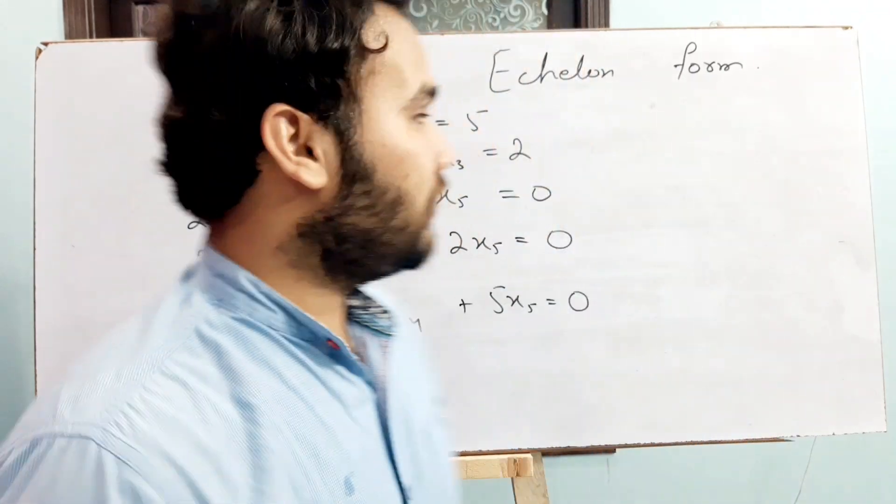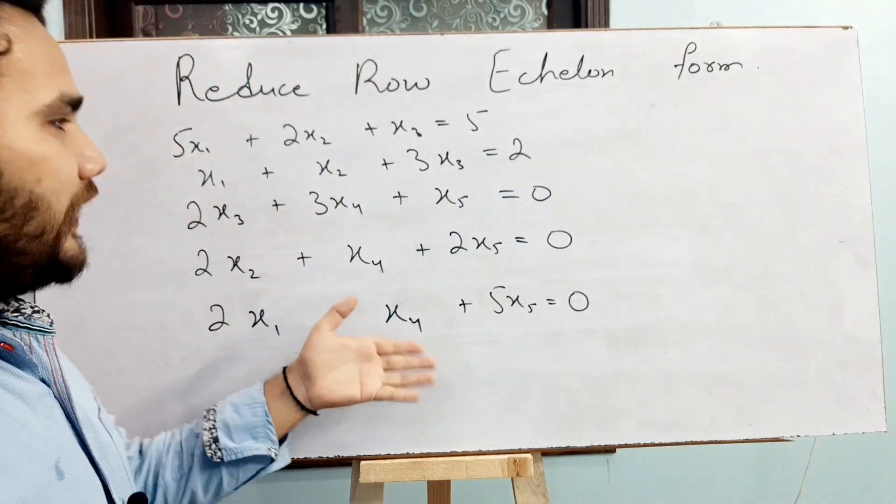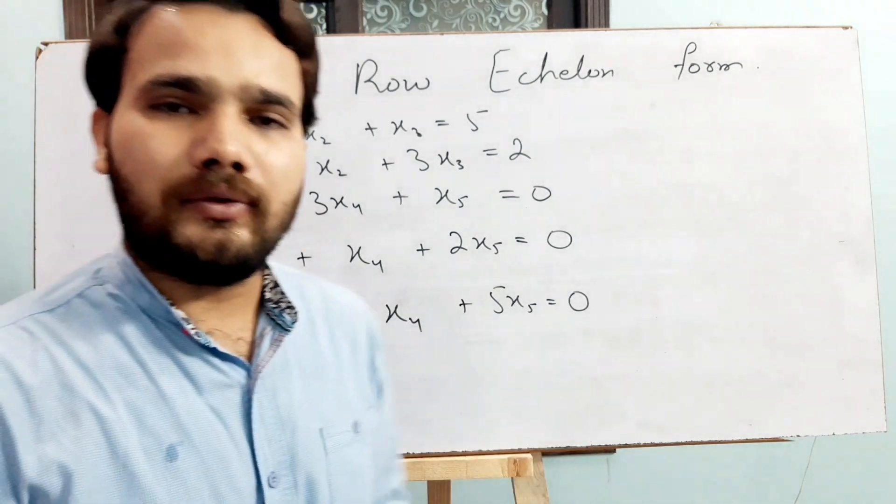Welcome friends. Here we have one new topic: reduce row echelon form for the 5 by 5 matrix, with 5 equations and 5 variables.